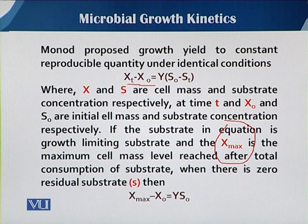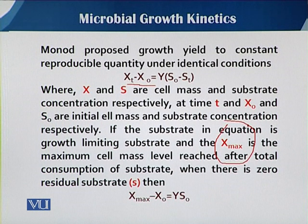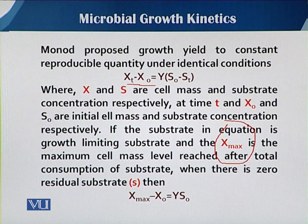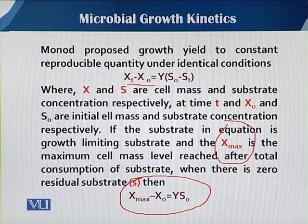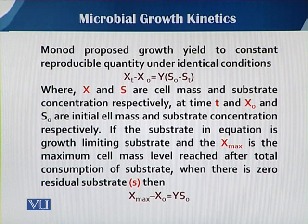Sometimes the medium does not contain only a single substrate — it contains a number of substrates including carbon source, nitrogen source, and other micro- and macronutrients. Out of all these nutrients, any one of them can become limiting, which affects the growth rate mu. Mu max is only achieved when there is no limiting substrate. If there is no more residual substrate for growth, then X-maximum equals the yield factor multiplied by S-naught.